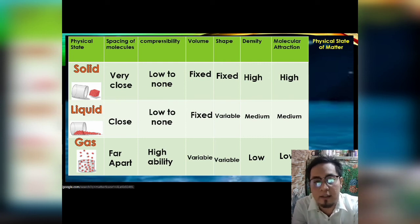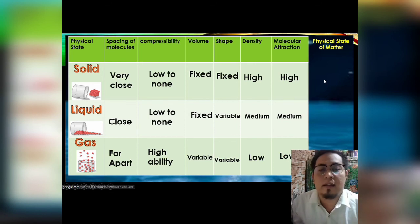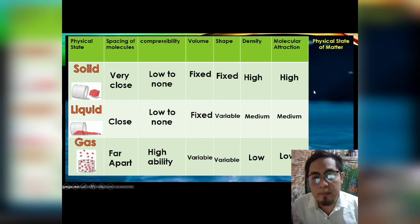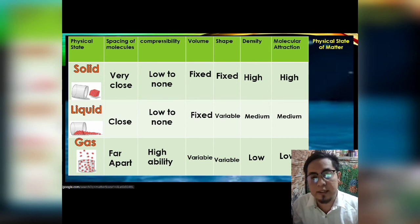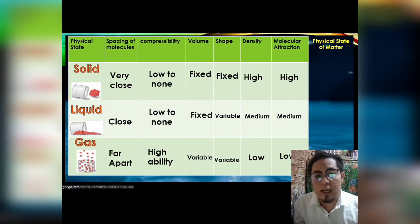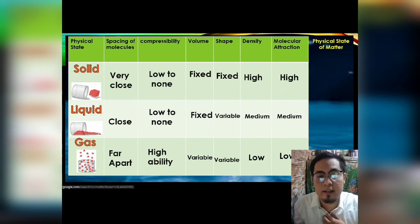An example of non-matter is light. Light occupies space — you can see it — but you cannot measure the mass of light. Light has no mass. So if one condition of matter is missing, we consider it non-matter. Since light has no mass but does occupy space, one condition is missing, so light is considered non-matter.